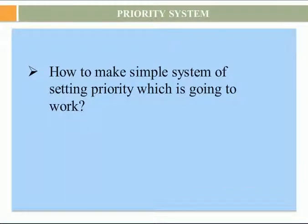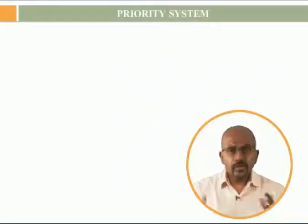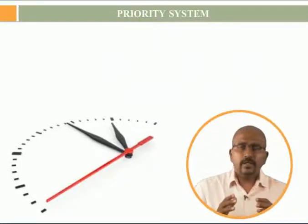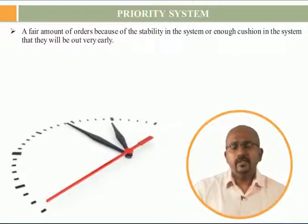We have the throughput time, and we know that the touch time within this throughput time is only about 10%. If it is only 10%, what are the chances of the majority of orders being on time? Definitely not 100% and definitely not 20%. A fair amount of orders will be out very early due to stability or enough cushion in the system.